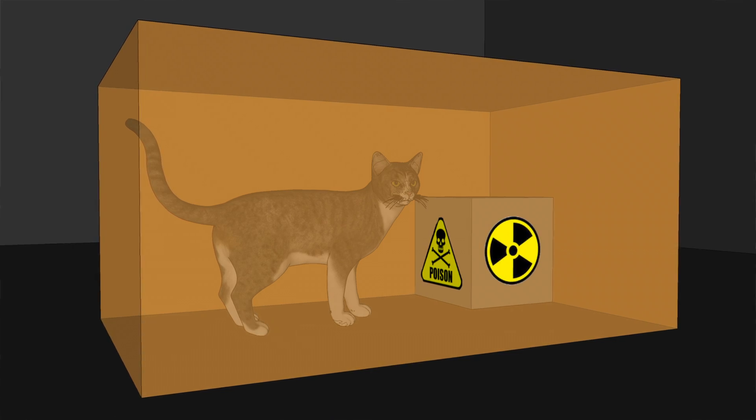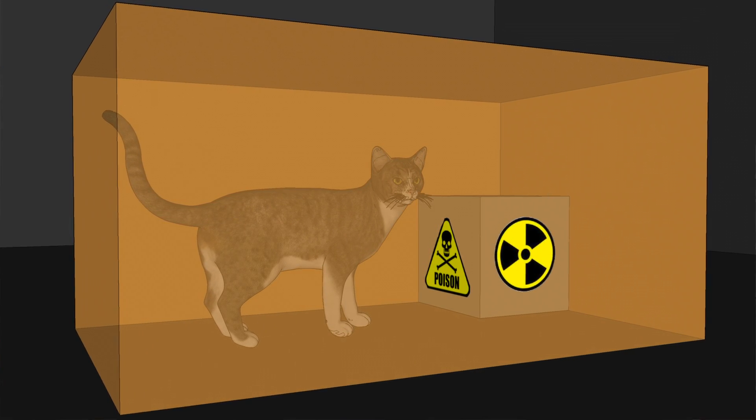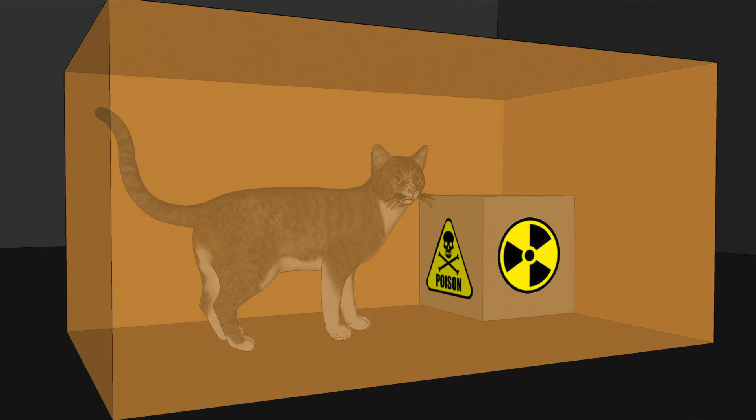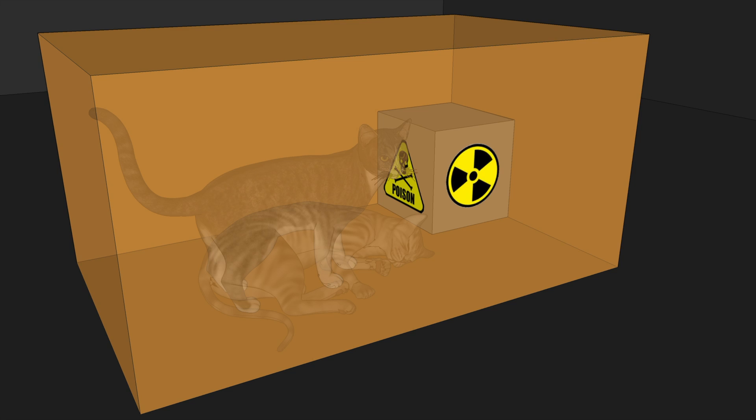Erwin Schrödinger came up with a thought experiment to try to disprove this theory. In the experiment, he places his cat in a sealed box along with a contraption that will release poison if a radioactive substance decays. The cat is in the box for an hour, so there is an equal chance of the cat dying and not. The unstable atom would be in superposition — both decayed and not decayed — and since the cat's fate relies on the atom's state, is the cat also in superposition, or does it collapse its own wave function?